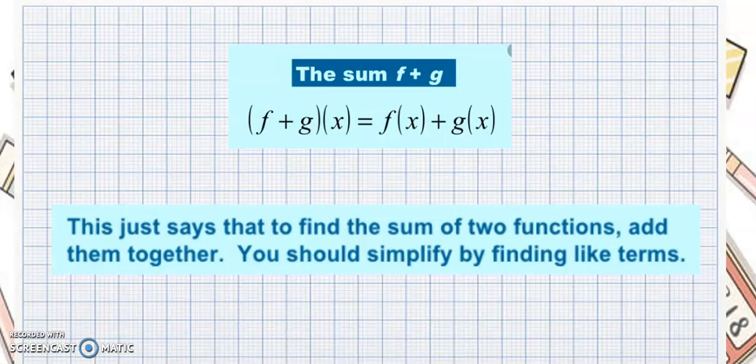Let's have the rules here. So the first rule, we have the sum of f plus g. If you have f plus g of x, that is also f of x plus g of x. This just says that to find the sum of two functions, you just need to add them together, then simplify by finding the like terms.